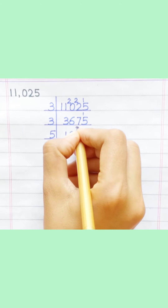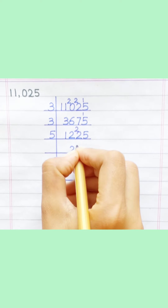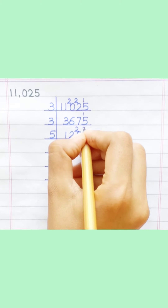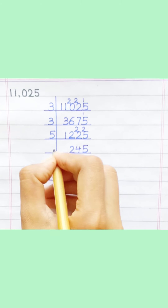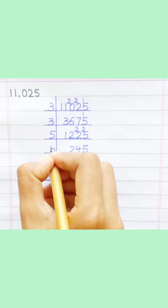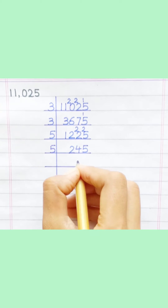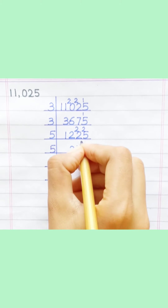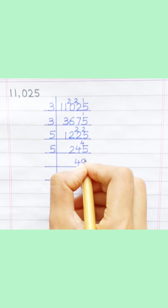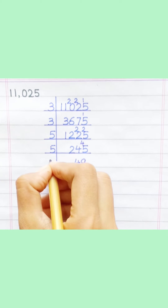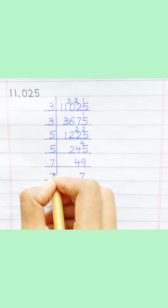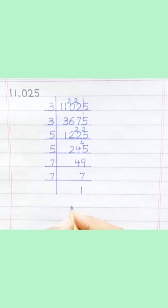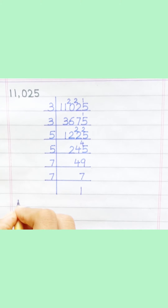Five twos are ten. Five fours are twenty. Five fives are twenty-five. Five fours are twenty. Five nines are forty-five. Seven sevens are forty-nine. Seven ones are seven. Eleven thousand and twenty-five.